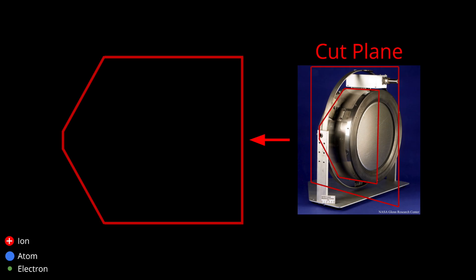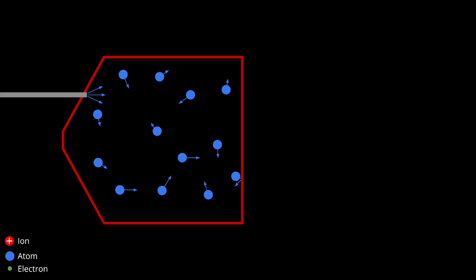Here's what a typical gridded ion thruster looks like if we cut it in half. First, we have a tube that sprays a tiny flow of gas into the thruster. Next, we ionize the gas by bombarding it with electrons. The electrons are emitted from a device called a hollow cathode in the center of the thruster, and then get attracted towards the thruster walls.